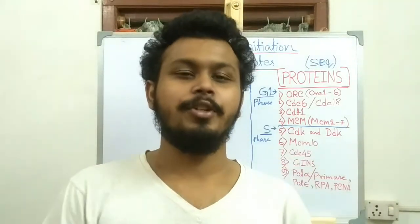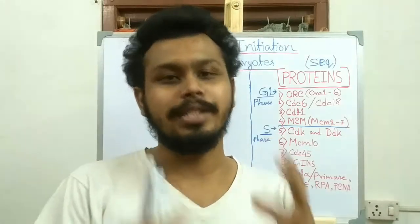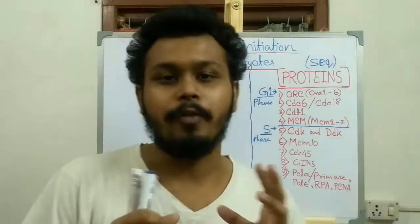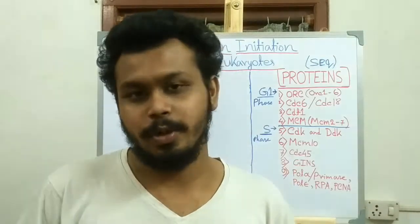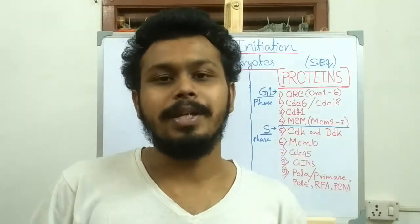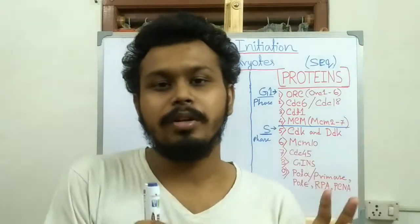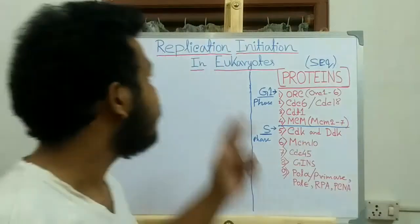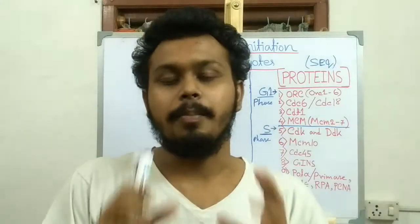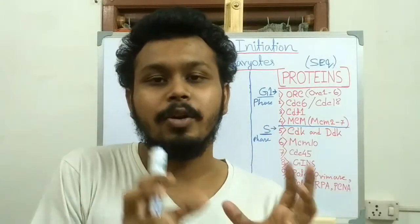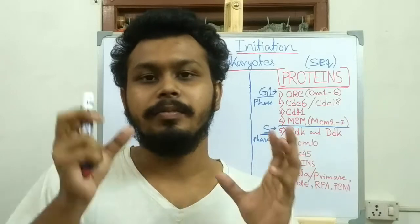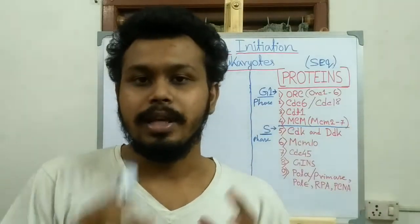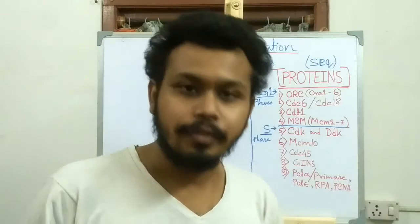Hello friends. Today in this video I am going to discuss about the replication initiation in eukaryotes by forming the pre-replication complex. The pre-replication complex is assembled in the G1 phase of the cell cycle and it is called the licensing of replication initiation. But the pre-replication complex cannot initiate replication in the G1 phase until the cell enters into the S phase of the cell cycle.